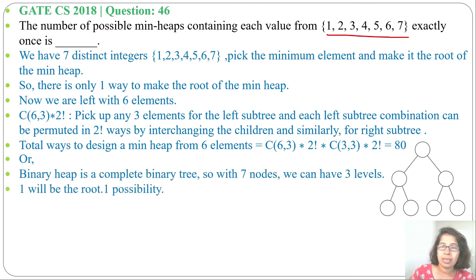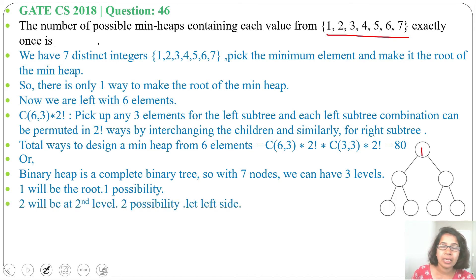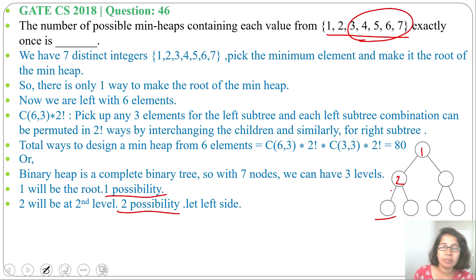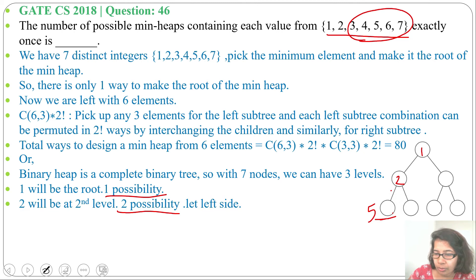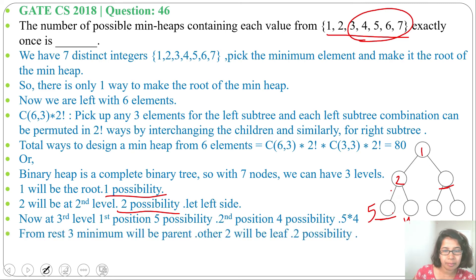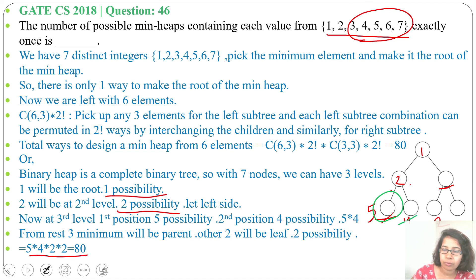Another way is to go element by element. Element 1 goes to the root — just 1 possibility. Element 2 can be left or right child of root, so 2 possibilities. After placing 1 and 2, there are 5 elements left; the first position at the third level can be filled in 5 ways, the second position in 4 ways. Then from the remaining 3 elements, the minimum is the parent of 2 and those 2 children can be arranged in 2 ways. So total = 5 × 4 × 2 = 40... combined with the 2 from step 2: 5 × 4 × 2 × 2 × 2 = 80.